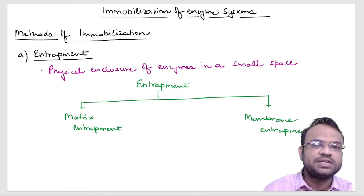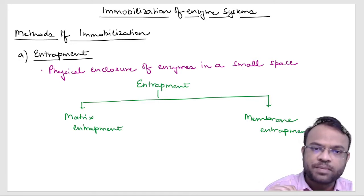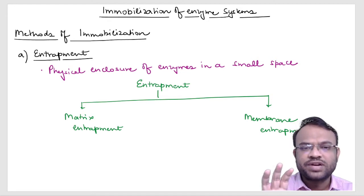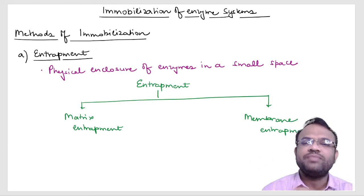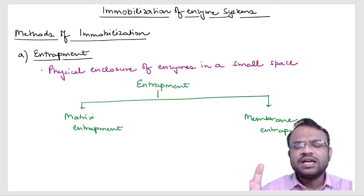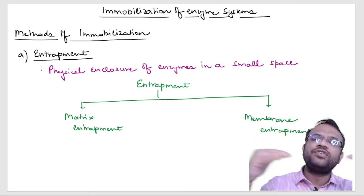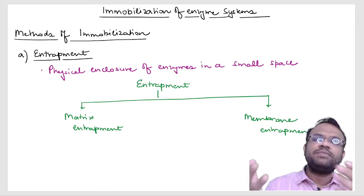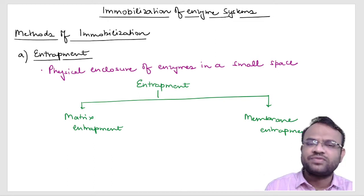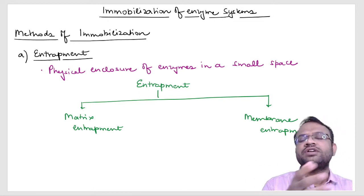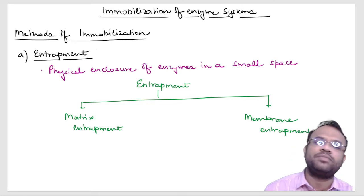Entrapment can be of two types: matrix entrapment and membrane entrapment. The primary difference is that in matrix entrapment, you make use of a matrix to entrap the enzyme, whereas in membrane entrapment you make use of a membrane. You are simply using different substances for the entrapment of enzymes — that is the basic difference.